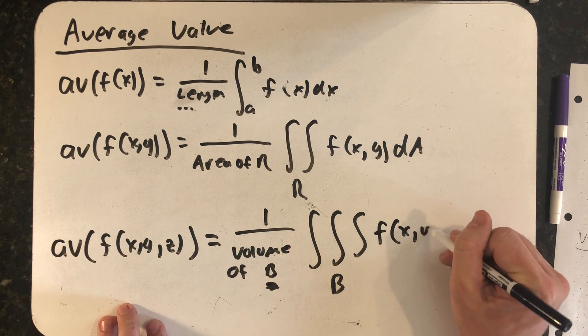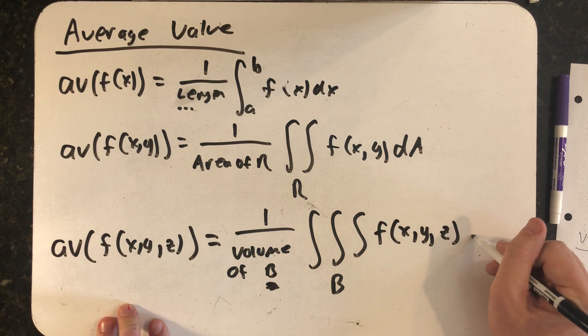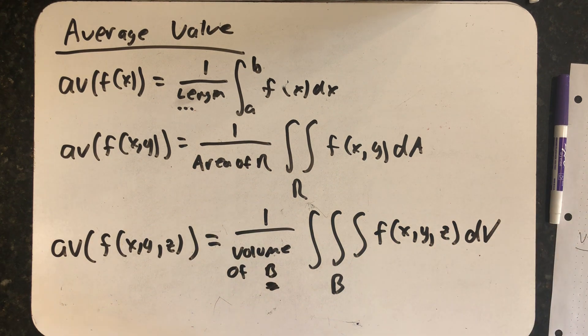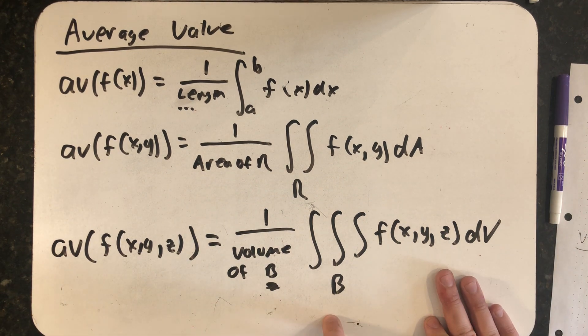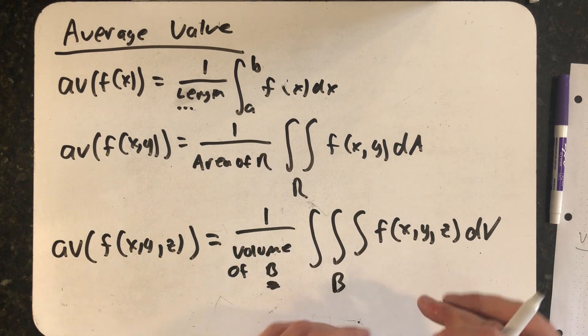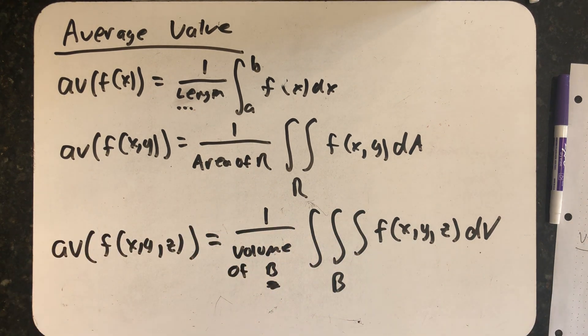The average value of a function on three variables, well we calculate a triple integral over the volume B, over the solid B, and we have to divide out the volume of B.